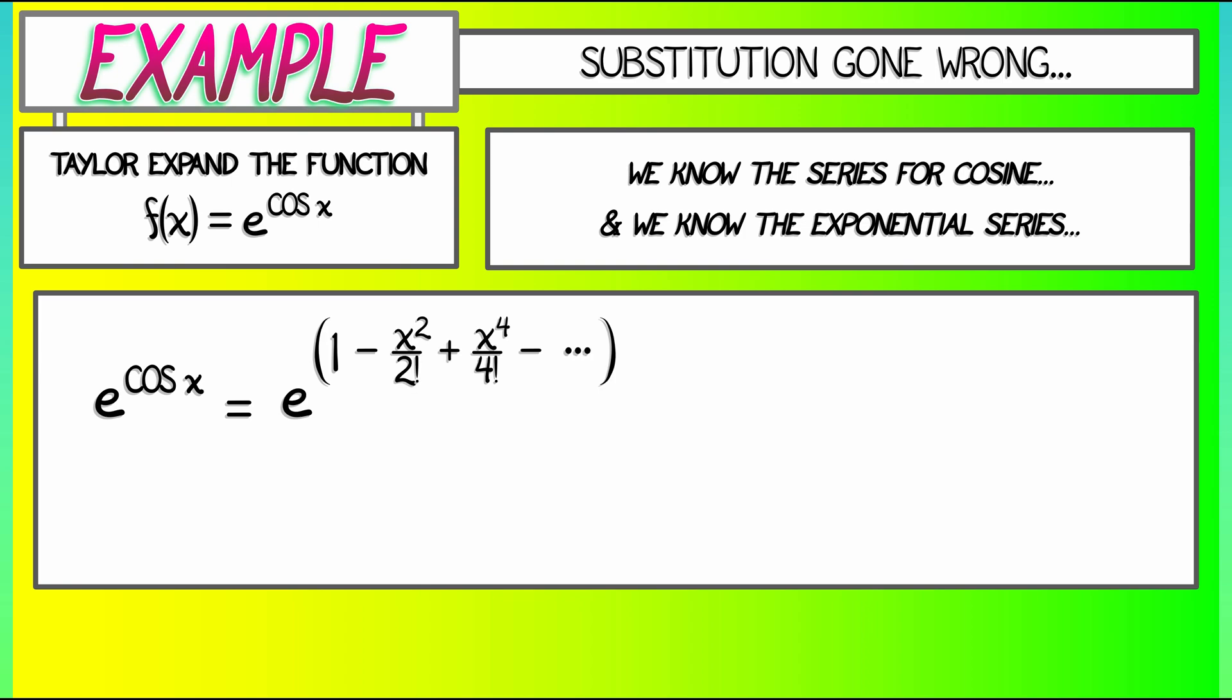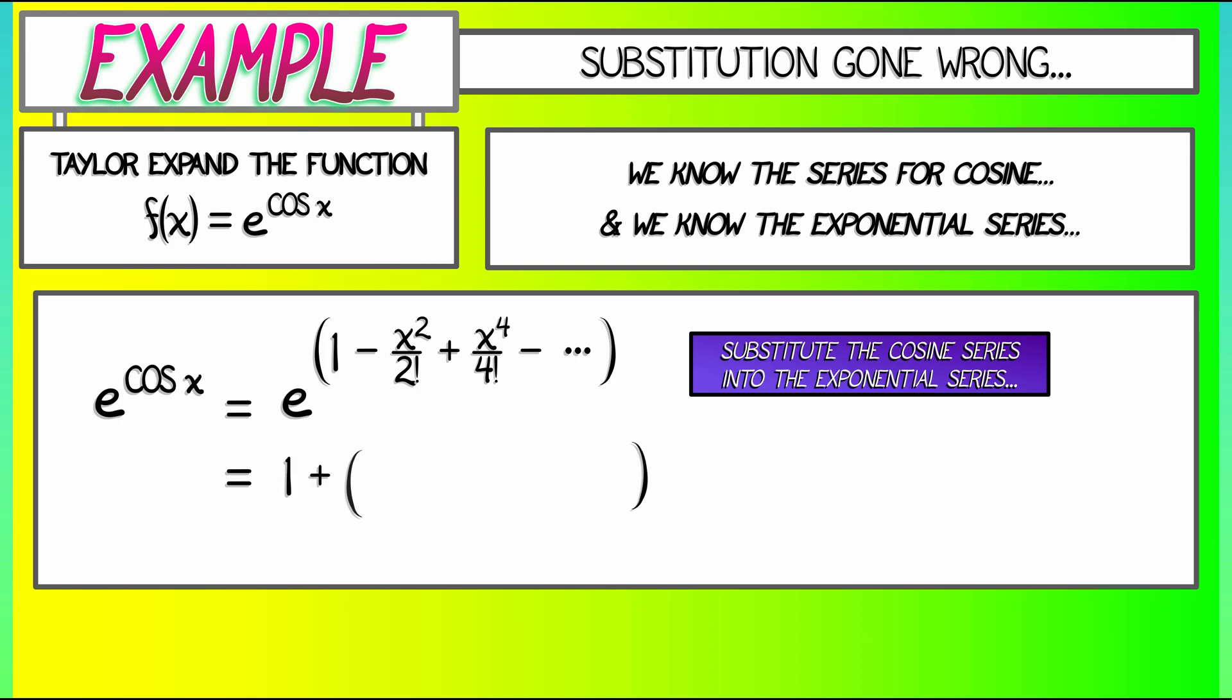Now, I can take that series and substitute it into the exponential series. So, what is e to the anything? It's one plus that thing, which in this case is the cosine series, plus one over two factorial times the cosine series squared plus one over three factorial times that guy cubed. I'm going to keep going.